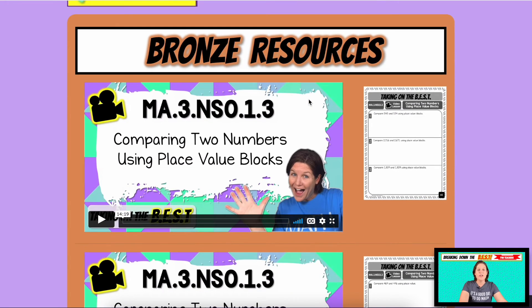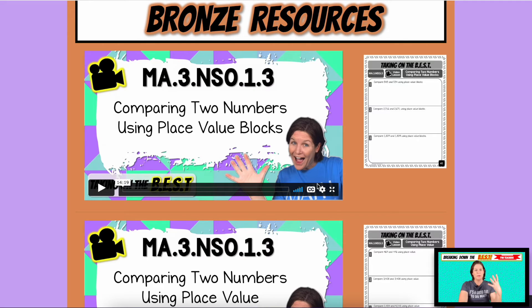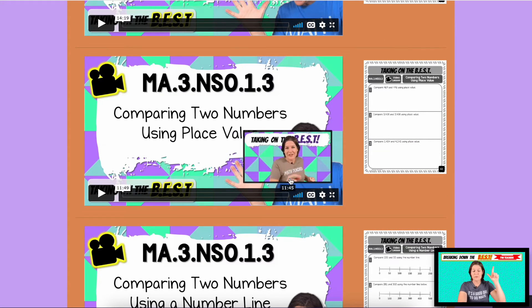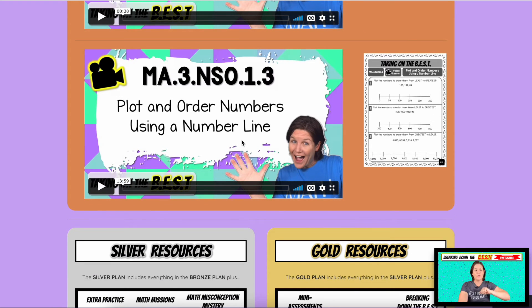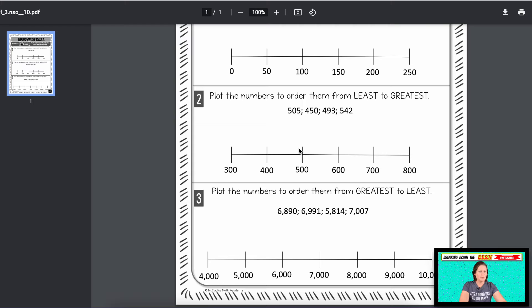If you have the bronze package, you have access to the video lessons and the printable student guides that go with it. For this one, I broke the videos down into comparing place, comparing two numbers using place value blocks, comparing two numbers using place value with a place value chart, and comparing two numbers using a number line, and plotting and ordering numbers using a number line. You can see it's building on each other.